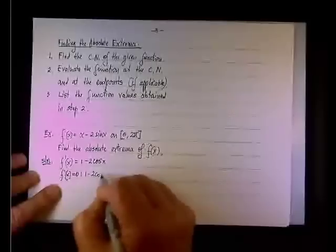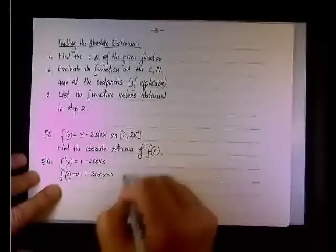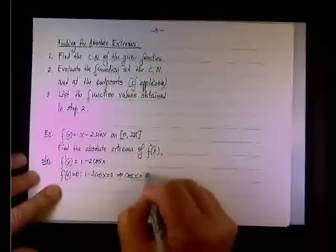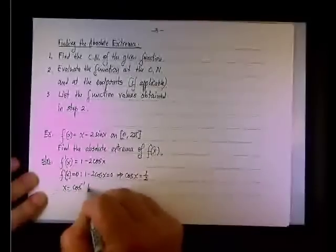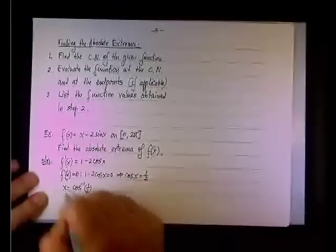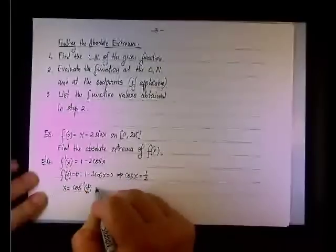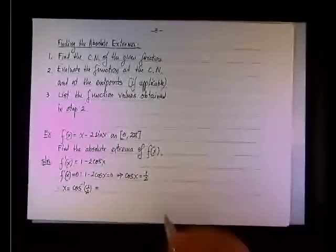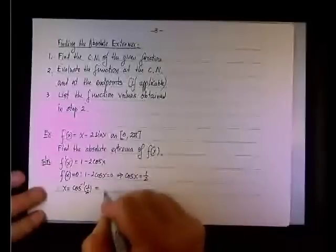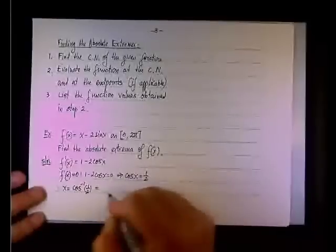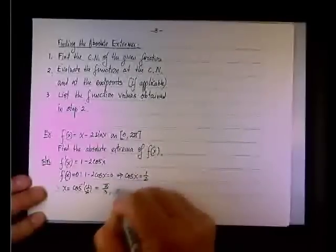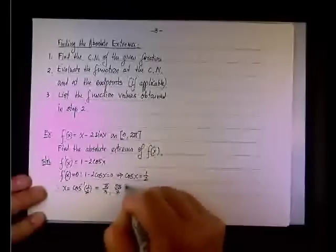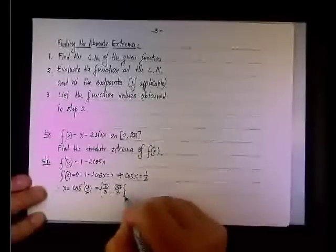To do so, we'll set one minus two cosine x equals zero, and this will happen when cosine x equals one half. We already had this solution: x is the inverse cosine of one half. We did it in the homework problem example. So the cosine is positive on the first and fourth quadrant, and cosine of pi over three and cosine of five pi over three both equal one half.